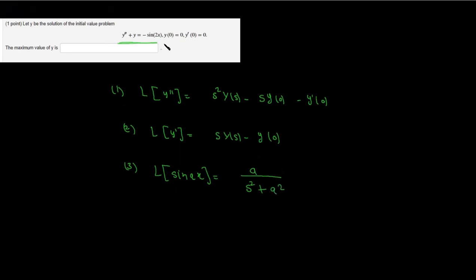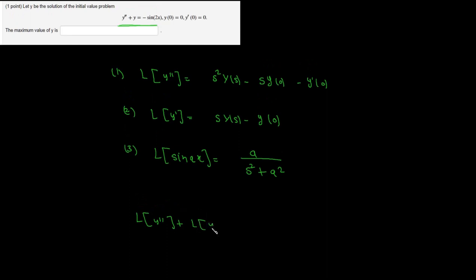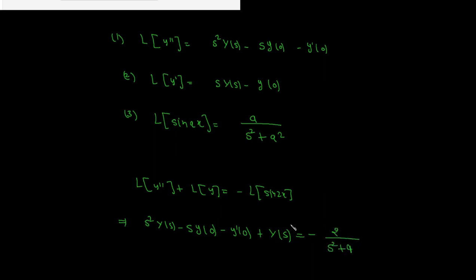In the next step we take the Laplace transform of the expression: Laplace transform of y double prime plus Laplace transform of y equals negative Laplace transform of sin(2x). This gives: s squared Y(s) minus s y(0) minus y prime(0) plus Y(s) equals negative 2 over s squared plus 4.